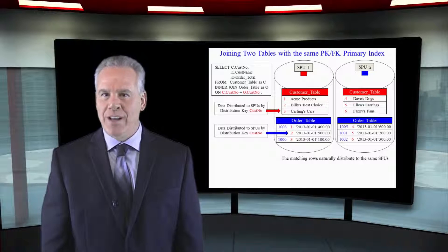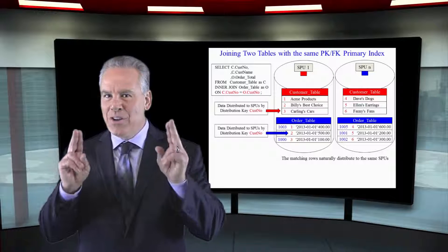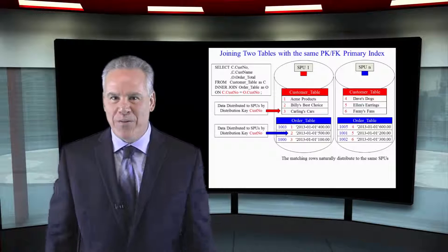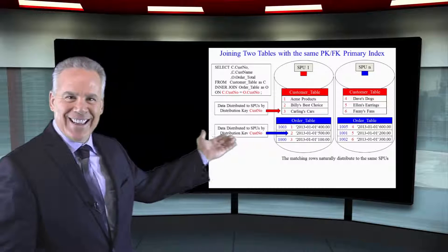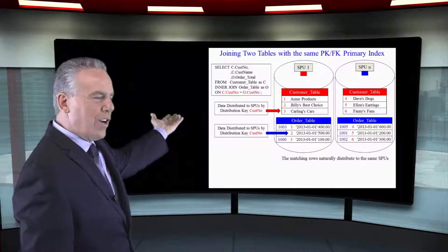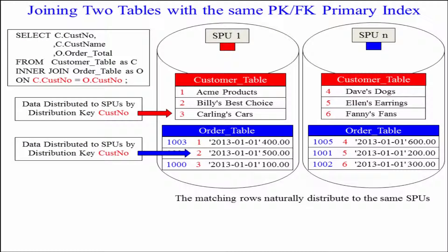When you're joining two tables on CustNo and you make CustNo the distribution key of both of them, this is how the data lines up right here. We're going to be joining on CustNo and CustNo. I've put that in red for you.